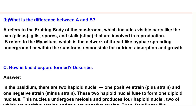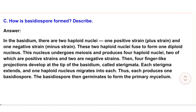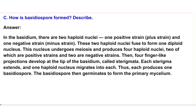(c) How is a basidiospore formed? Answer: In the basidium, there are two haploid nuclei — one positive strain (+) and one negative strain (−). These two haploid nuclei fuse to form one diploid nucleus. This nucleus undergoes meiosis and produces four haploid nuclei — two positive strains and two negative strains. Then four finger-like projections called sterigmata develop at the tip of the basidium. Each sterigma extends and one haploid nucleus migrates into each, producing one basidiospore. The basidiospore then germinates to form the primary mycelium.